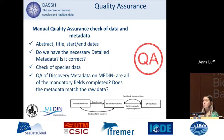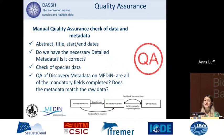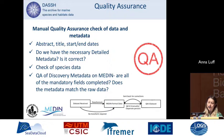The next step is to quality assure our data. This involves checking for things such as abstract, title, start and end dates — do we have the necessary detailed metadata and is it correct? We also do a check of the species data sent to DASH, which is more of a sense check: are there species in habitats they shouldn't be in, or marine species recorded inland? We famously had a Chinese mitten crab recorded on the top of Ben Nevis, which is quite a feat for a crab. We also QA the discovery metadata on Medin, checking all mandatory fields are completed and that the metadata matches the raw data.